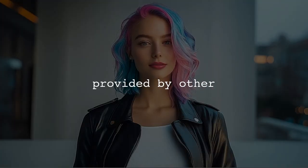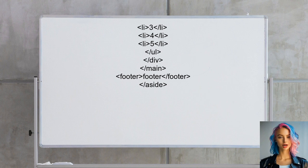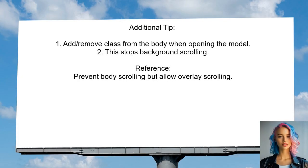Now, let's look at the answers provided by other users. An alternative approach suggests using Position Absolute for the scrollable div. This method allows the scrollable area to be positioned correctly within the modal layout. The user provides a CodePen example to illustrate both long and short content scenarios. Additionally, to prevent background scrolling when the modal is open, the user recommends adding or removing a class from the body element — this can effectively stop the background from scrolling while allowing the modal content to scroll.